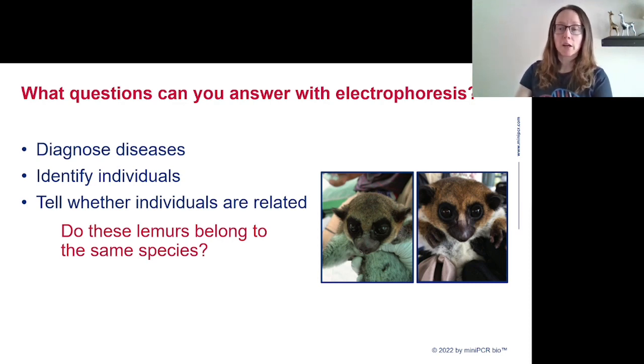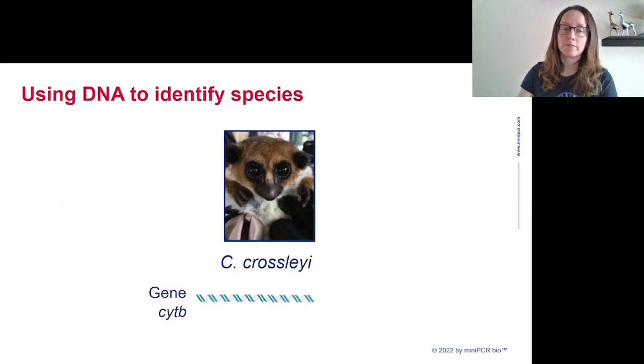We can walk through an example inspired by our Discovering Lemur Diversity Learning Lab. In that lab, we use electrophoresis to determine whether lemurs living in the wild in Madagascar belong to different species. By looking at lemur DNA, we get a conclusive answer to this question. We can take advantage of the fact that gene sequences are different for different species. Cyt B is the name of a gene commonly used for species identification.